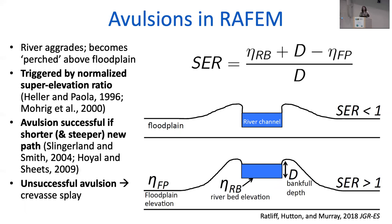As either base level rises or the river progrades, the riverbed will also aggrade due to that linear diffusion equation. At a certain point, the riverbed will become relatively perched versus the distal floodplain location. I use a normalized superelevation ratio where the channel bed superelevation is normalized by the channel depth to calculate when an avulsion would occur. A superelevation ratio less than one means the riverbed elevation is below the floodplain elevation; greater than one means it's higher. Once this critical superelevation ratio is reached in a given river cell, the new steepest descent path to sea level is calculated. If that path is shorter — and therefore steeper — the avulsion is successful and the river changes course. If the new path is not shorter and therefore not steeper, the avulsion is not successful and instead a crevasse splay is deposited adjacent to the river.